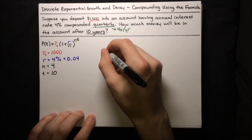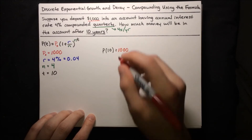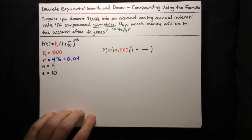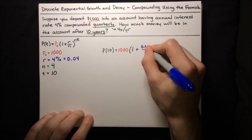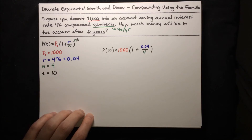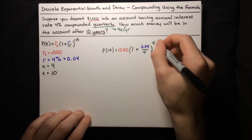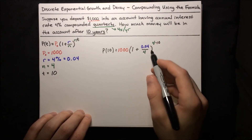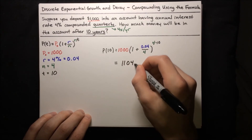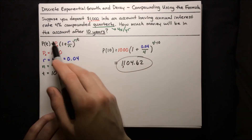So P of 10 equals 1,000 times (1 plus 0.04/4) to the power of 4 times 10. We punch that into our calculator, and the result is $1,104.62. So $1,104.62 is how much money is in the account after 10 years.